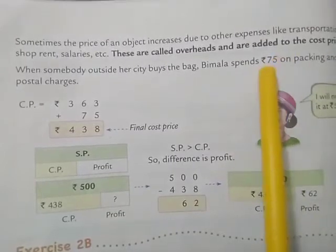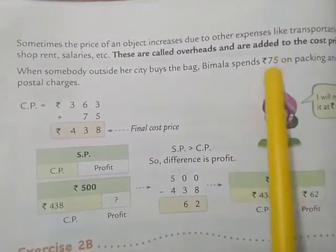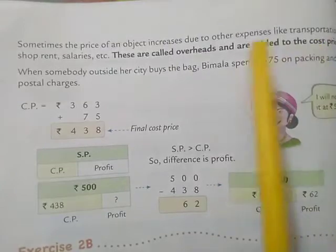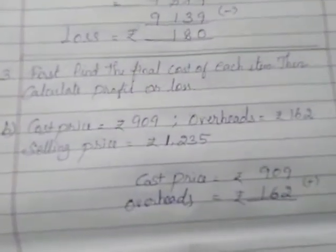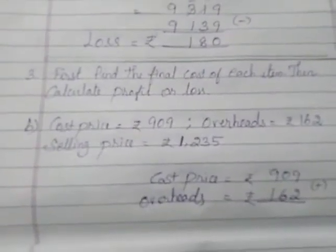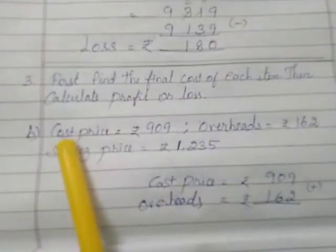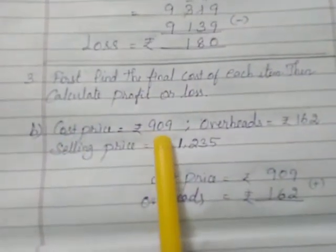So the overheads amount always added to cost price. So let's see. Let's see one sum. Cost price that is ₹909.